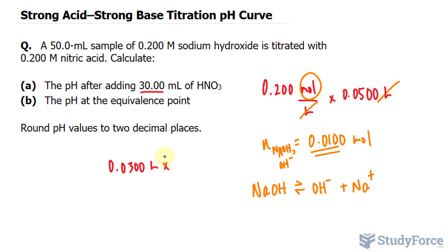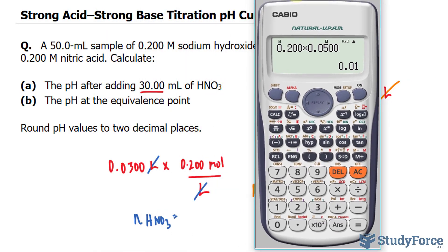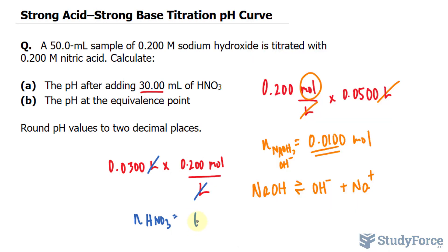The amount of moles represented by the letter N of HNO3 is equal to these two numbers multiplied, and we end up with 6 times 10 to the power of negative 3, and we need this to three significant figures. So 6.00 times 10 to the power of negative 3 moles.